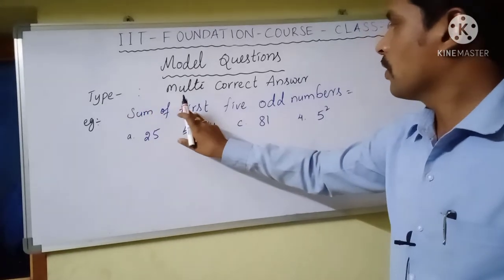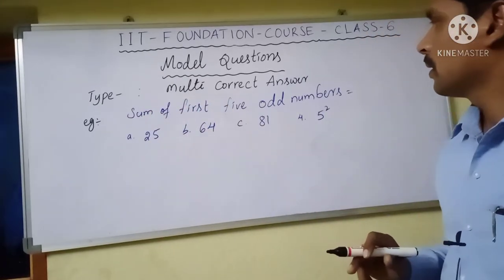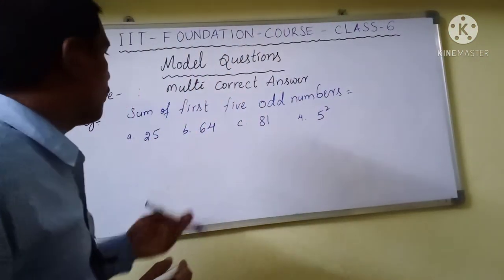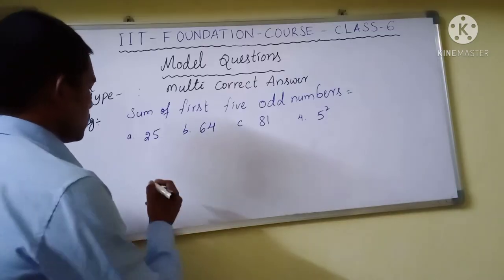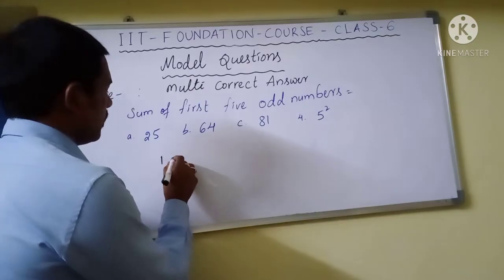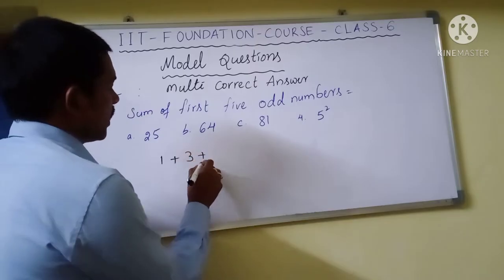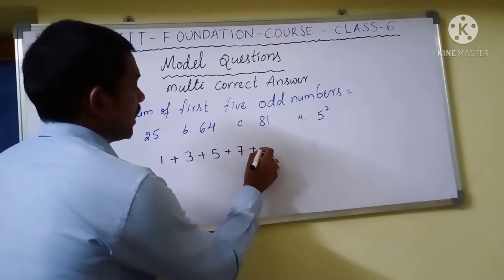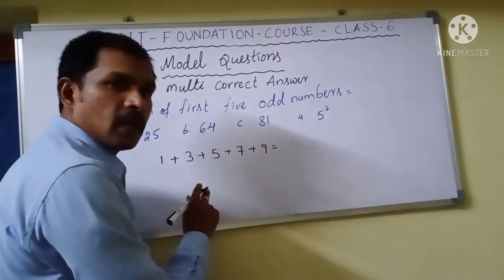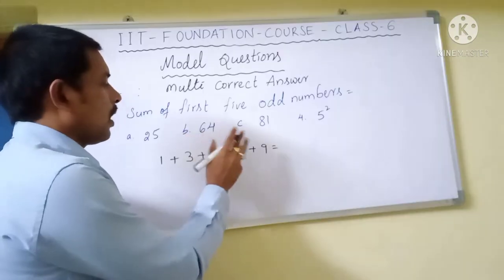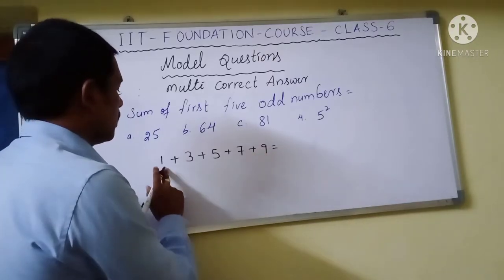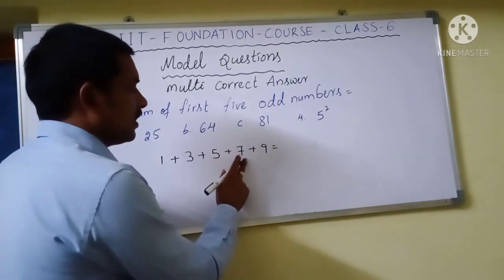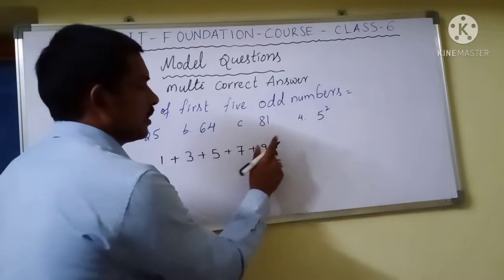Now we will discuss the Multi Correct Answer type model. For example, find the sum of the first five odd numbers. The first five odd numbers are 1, 3, 5, 7, and 9. Calculating: 1+3=4, 4+5=9, 9+7=16, 16+9=25. The sum is 25, which is also 5 squared.